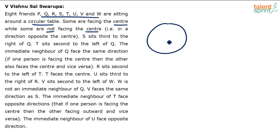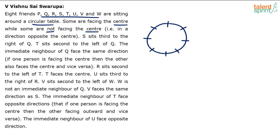Let's put up a circle with eight positions. The first clue: S sits third to the right of Q. This cannot be directly marked because it depends on which direction Q is facing. If Q is facing center, S will be third anticlockwise of Q. If Q is facing outwards, S will be third clockwise of Q. Similarly, T sits second to the left of Q, which also depends on Q's direction. So we start with two possibilities: Q facing center, and Q facing outwards.